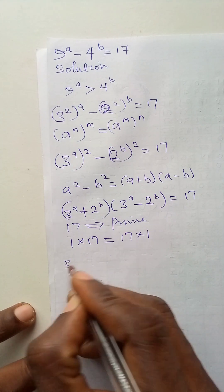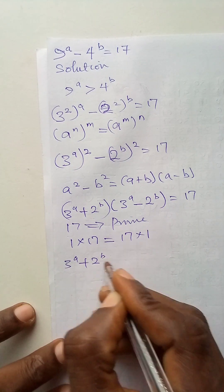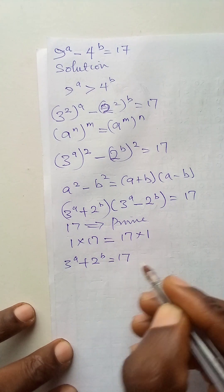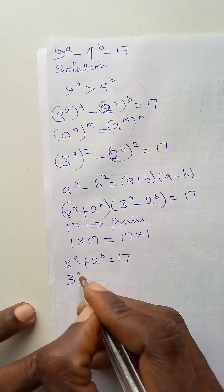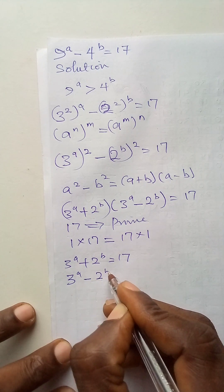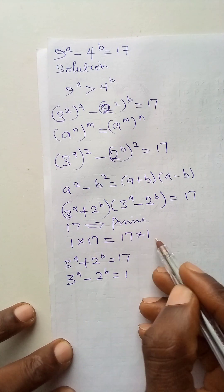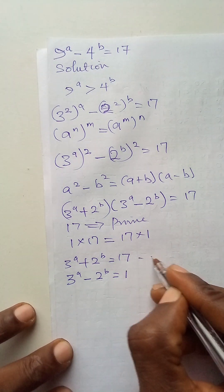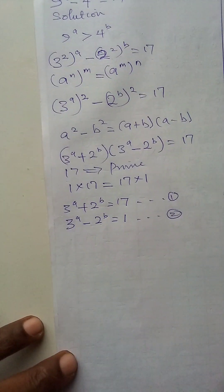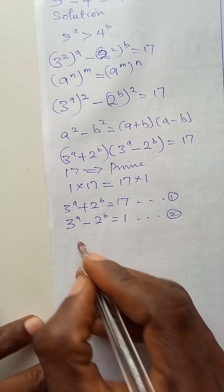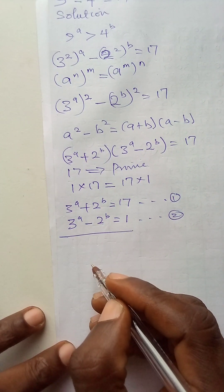So, equating them, I have 3 to power a plus 2 to power b is 17, and 3 to power a minus 2 to power b is 1 because 17 times 1 is 17. This will now be equation 1 and this will be equation 2. I will have to solve 1 and 2 simultaneously.